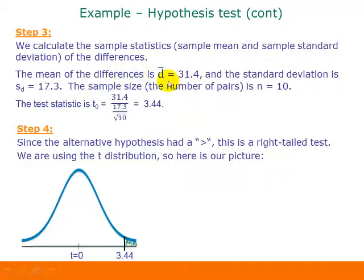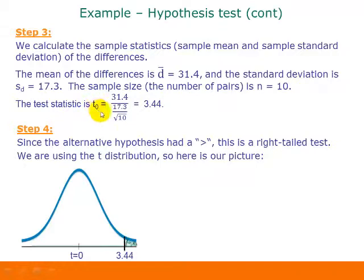The mean of the differences, D-bar, is 31.4, and the sample standard deviation S sub D is 17.3. The sample size is 10 pairs. So the test statistic T sub naught is 31.4 divided by 17.3 divided by the square root of 10, which equals 3.44.